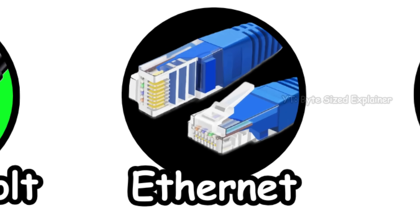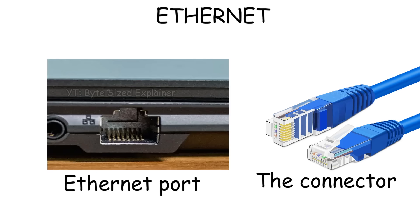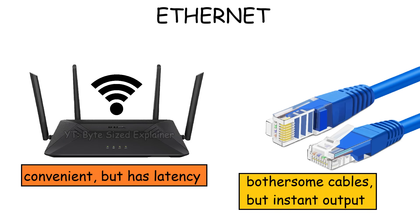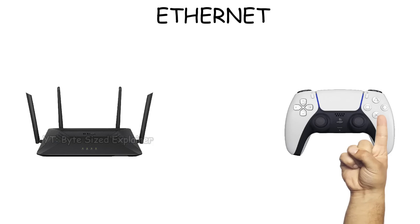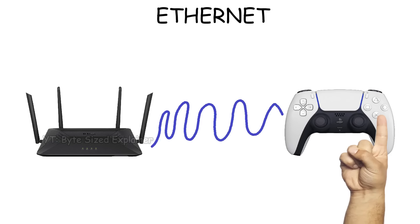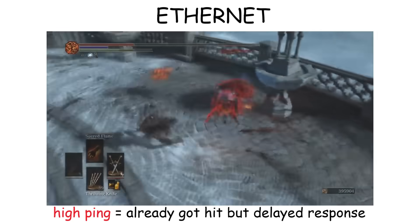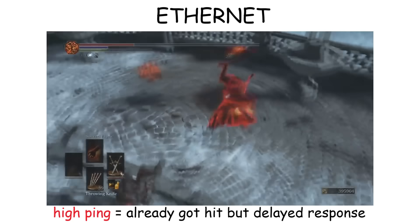Ethernet is the port you use to connect to the router for Internet access. And compared to Wi-Fi, a wired connection like Ethernet will give you a more stable connection and lower latency. Because something wireless like Wi-Fi needs to convert inputs or commands into radio waves first, and then send those waves to the router, which then converts them back into data. So this conversion process adds latency or delay.